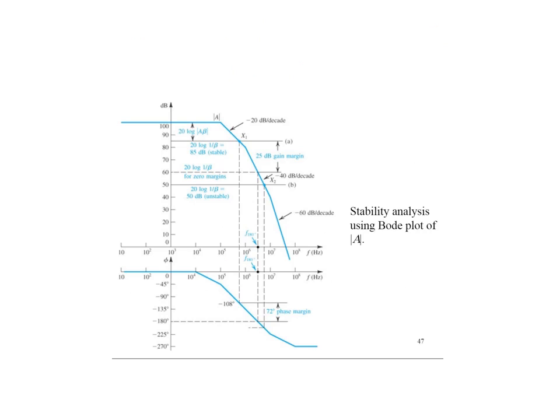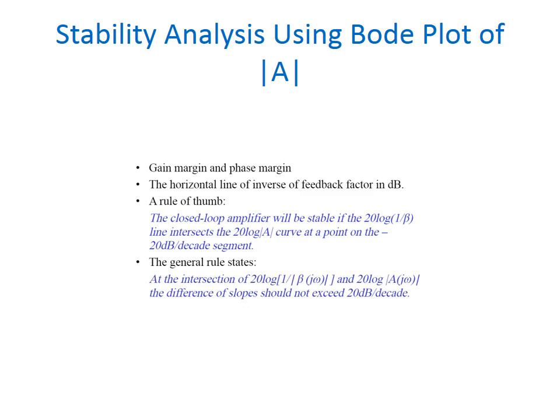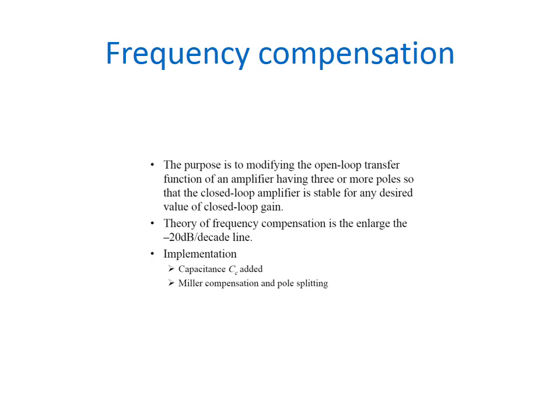This is the stability analysis using Bode plot of modulo A. Here, the gain margin and phase margin can be calculated by considering the horizontal line of inverse of feedback factor in decibel. The rule of thumb is the closed loop amplifier will be stable if the 20 log of 1 by beta line intersects with the 20 log of modulo A curve at a point on the 20 decibel per decade segment. The general rule states that at the intersection of 20 log of 1 by beta j omega and 20 log of modulo A of j omega, the difference of slopes should not exceed 20 decibel per decade.